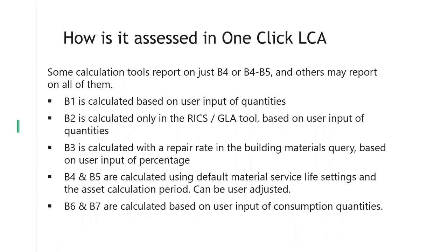How do we report these in OneClickLCA? Most of our calculation tools only do B4 or B4/B5 — they don't really report on any of the others. B1 is not mandatory in any calculation tool to my current knowledge, though in the UK when doing GLA assessments it is sometimes asked for. B2 is currently only available in our UK-based tools because it's a requirement for GLA and RICS. In those cases it's always based on user input, because there is no way to have a scenario for it — there just hasn't been enough research done on this topic.